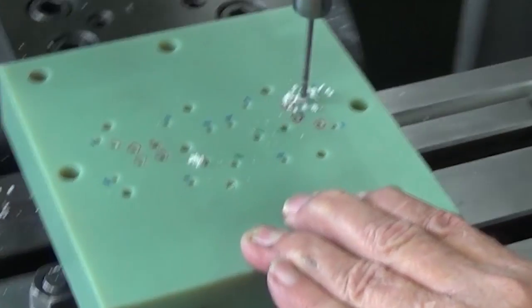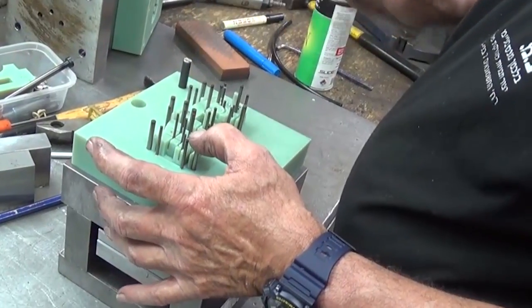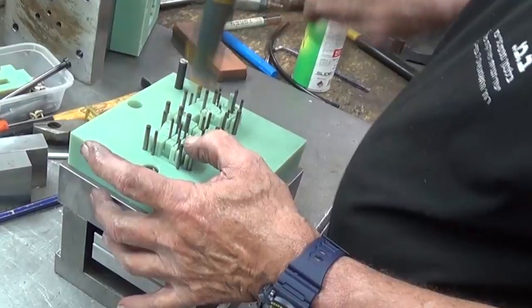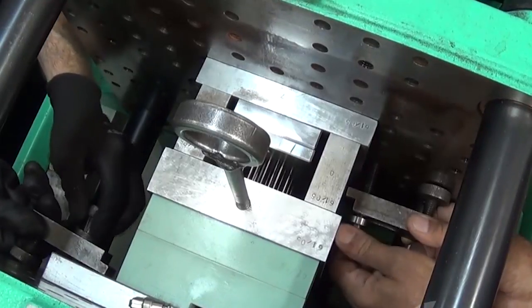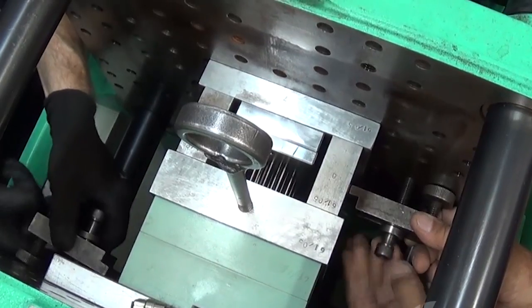For automated extraction, fit an ejection system, which uses pins that pass through the core to push apart from the mold, and then mount the printed tool in a mold base. Now you are ready to injection mold parts.